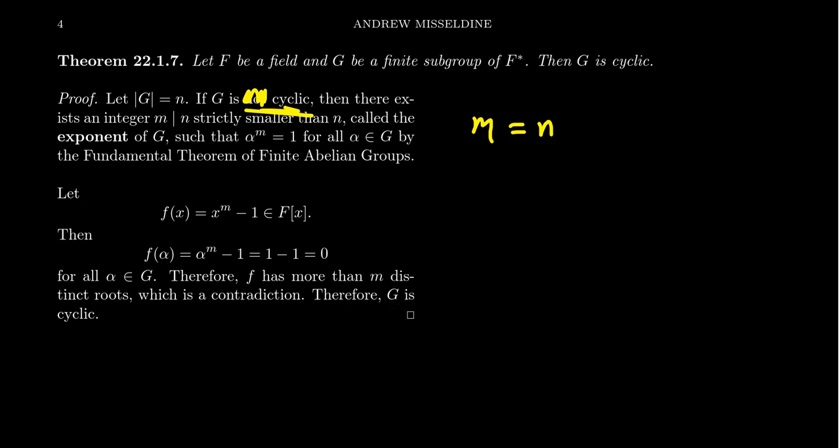I just love this proof, because polynomials can't have more roots than their degrees, and that forces multiplicative subgroups of a field to be cyclic. It's so elegant how those two seemingly unrelated ideas come together in such a clean proof.